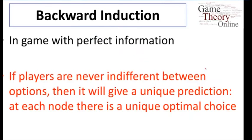Generally when we look at backward induction, if we're working with these games of perfect information, if players are never indifferent between options, then it will give us a unique prediction. Players will always have a single strategy at every particular node that maximizes their payoff, and we can back up the tree and end up with a unique prediction overall.